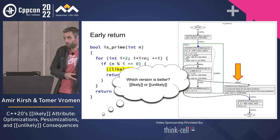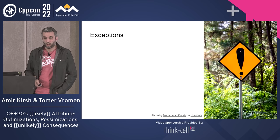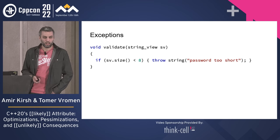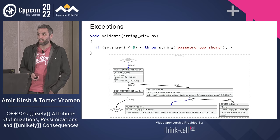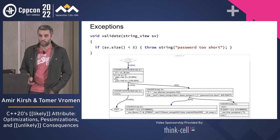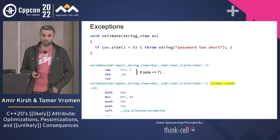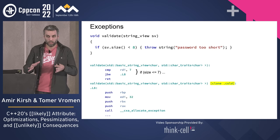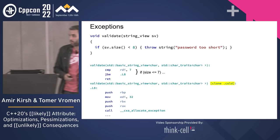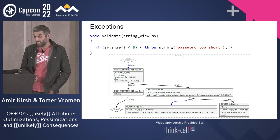Let's talk about exceptions. Here we have a simple validate function that takes a string_view and throws if it's too short — "password too short." GCC shows 0% likelihood of taking the exception. GCC even splits the function into two parts — the second part is marked "cold clone," which tells the linker: when you link the whole program together, you can put this part as far away as possible. So in the executable, the same function may be physically split into two parts.